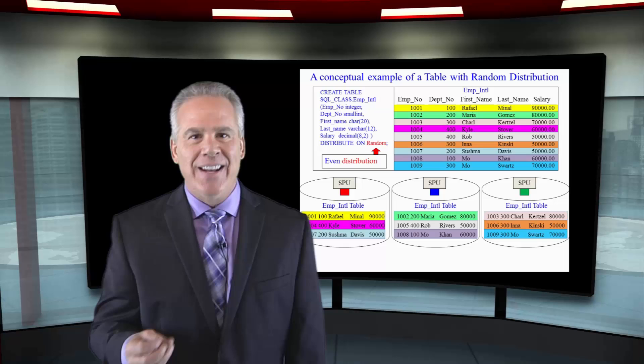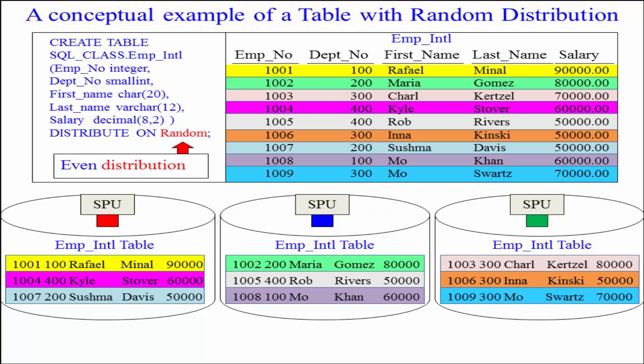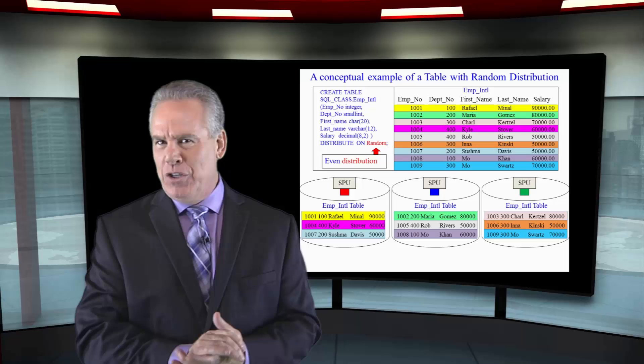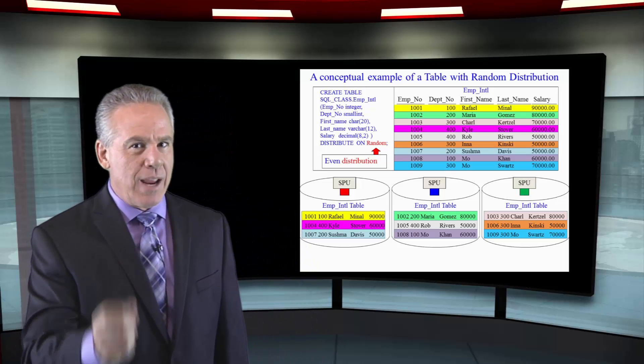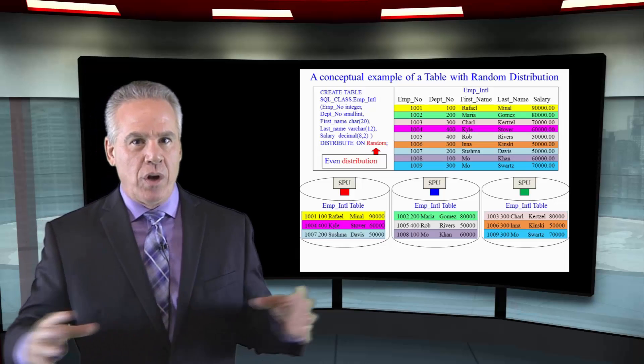Netezza invented the distribute on random. So as you can see here, we're going to be able to guarantee perfect distribution among those SPUs. Now, we're not going to be able to get a single SPU retrieve because we're using the distribution key in the WHERE clause, but for a lot of certain type of tables and certain type of queries, we're going to want to distribute on random.